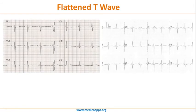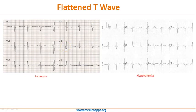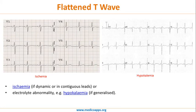Flat T waves — flattening can be generalized, where all leads show flattened T waves with hardly any T wave visible, or it may be localized, where T waves are present in some leads but absent or reduced in others. Cardiac ischemia generally presents with localized flattening of T waves in those specific leads where ischemia is occurring. In contrast, electrolyte imbalance such as hypokalemia presents with generalized flattening of T waves. So localized flattening suggests ischemia; generalized flattening suggests hypokalemia.